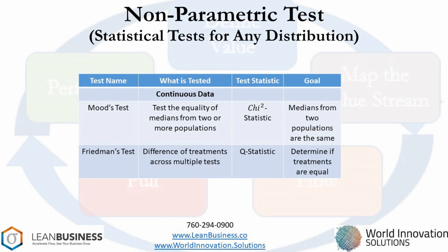Friedman's test is used to test treatments for consistency. You may be in a situation where you are using treatments and want to know if there is a difference between treatment effects. One example could be that you have a business that makes guitars. Each guitar is finished with a coat of lacquer. Your lacquer salesman says that he has a new lacquer that outperforms the current brand with respect to blemishes. Friedman's test is designed to let you know if there is a statistical difference between those two treatments.